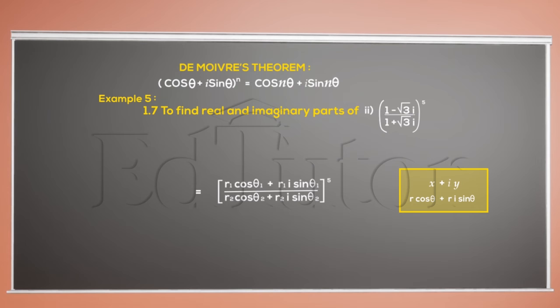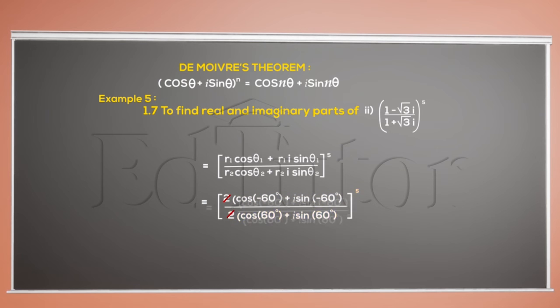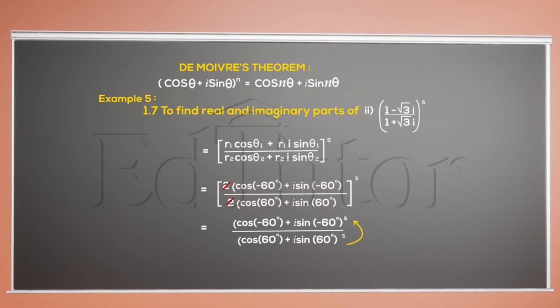Now that we have it, we can plug these in here like this. Next, cancel the 2 and apply the power individually on the numerator and the denominator. We can bring the numerator to the upside by changing the power to negative 5.